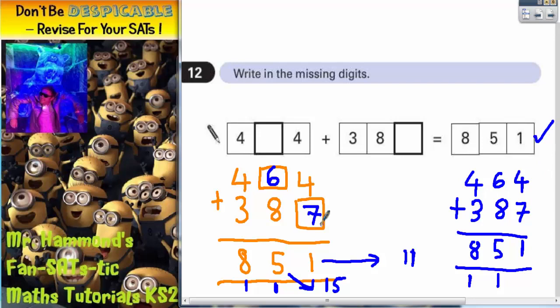So we must have got the correct answers. So this missing number needs to be a six. And this missing number needs to be a seven. And that is the final answer.